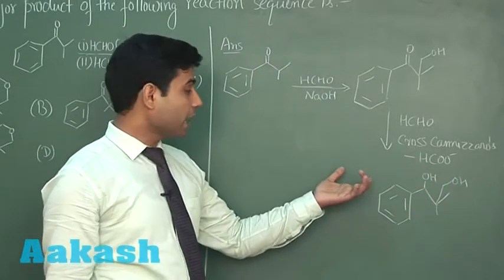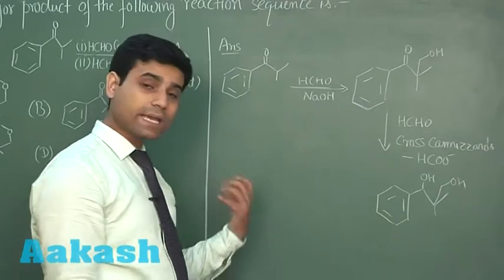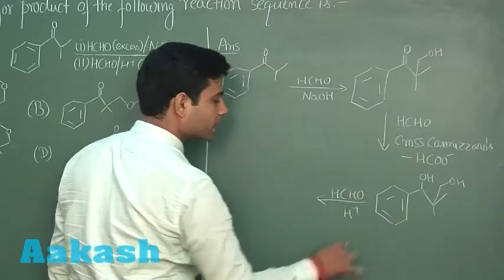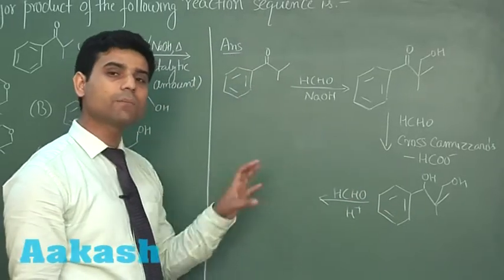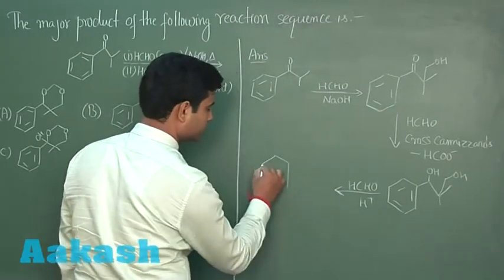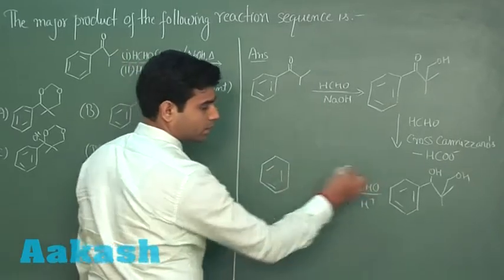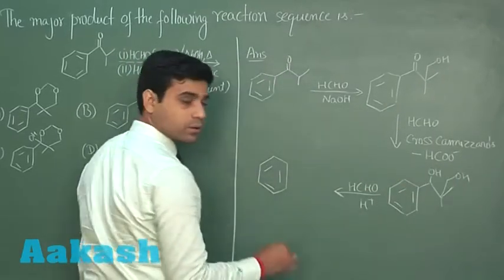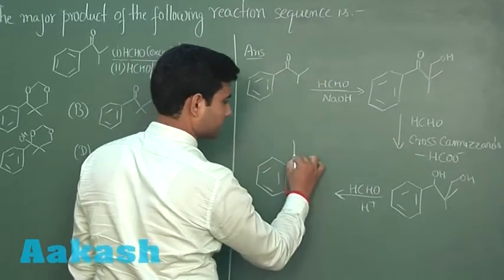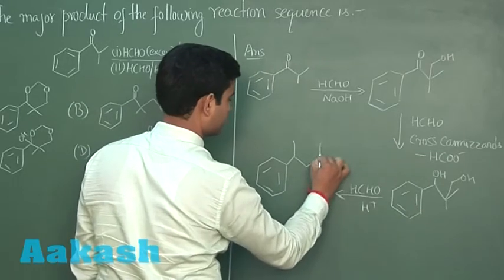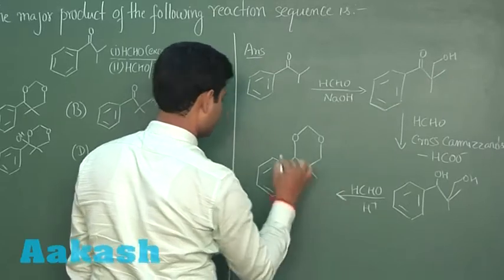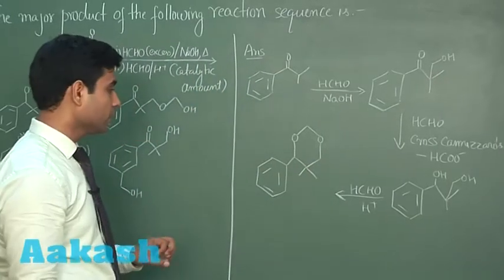Here we can see we have a diol. In the second step, we have HCHO and along with this HCHO, we have H+ in catalytic amount. So, the acetal formation will take place and the product form will be cyclic one. From these OH groups, water will be removed. This will be the final product formed in this reaction.